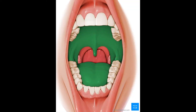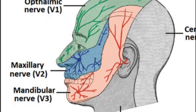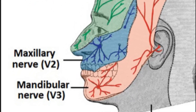Hey guys, it's Leila. Today we'll speak about dental anesthesia and the different injection points in the oral cavity. To have a good understanding, you first need to know the nerve distribution of the face, mainly the jaw and the mouth. The trigeminal nerve gives off three branches: the ophthalmic, maxillary, and mandibular — but we're only interested in the maxillary and the mandibular.